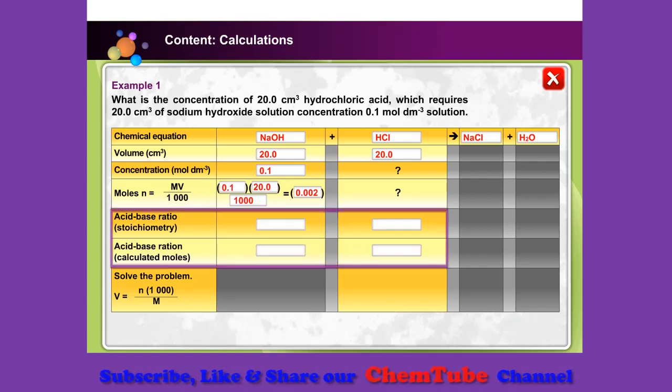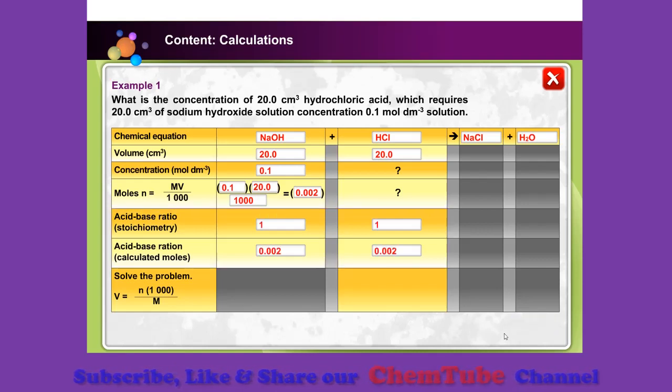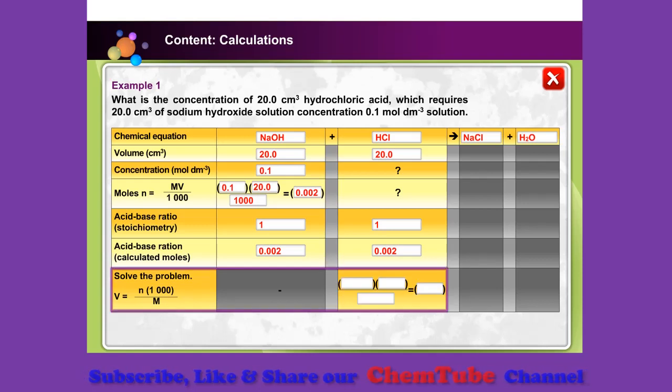Next, the stoichiometry and the calculated moles. Calculate the number of moles of sodium hydroxide. Then, calculate the number of moles of hydrochloric acid. Lastly, rearrange the concentration formula to solve the problem.